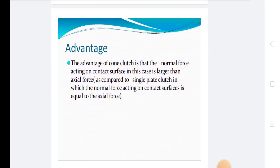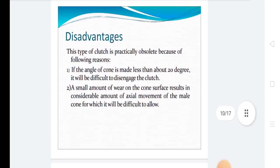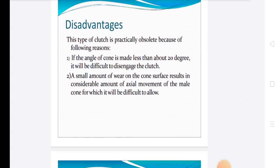The advantage of a cone clutch is that the normal force acting on the contact surface is larger than the axial force, as compared to a single plate clutch in which the normal force acting on the contact surface equals the axial force. Disadvantages: this type of clutch is practically obsolete for the following reasons. If the angle of the cone is made less than about 20 degrees, it will be difficult to disengage the clutch. A small amount of wear on the cone surface results in considerable axial movement of the male cone, which is difficult to accommodate.